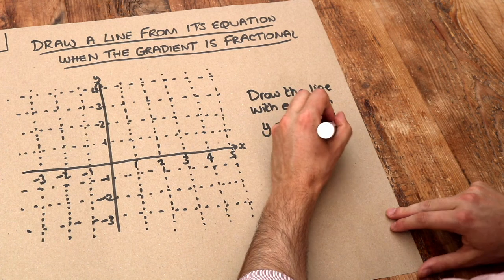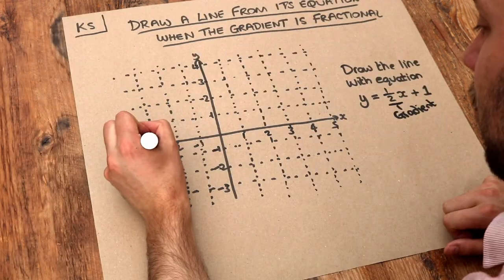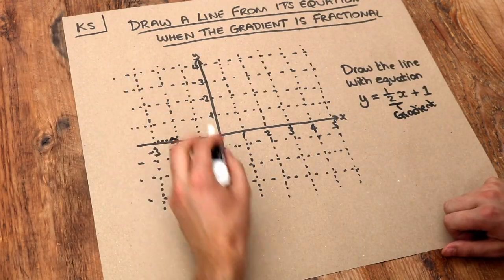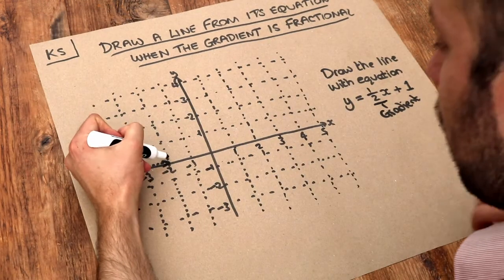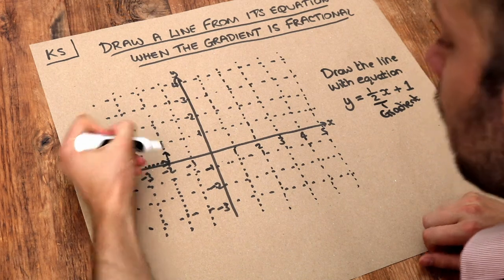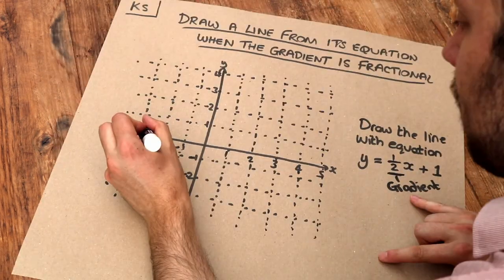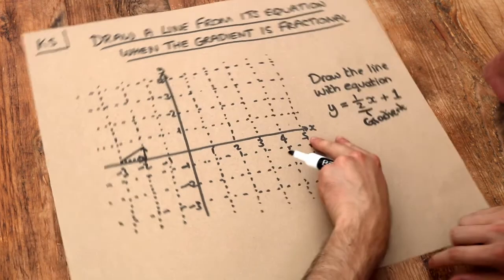The gradient tells you that each time x increases by 1, what does the y value change by? So it's basically saying the y value is going up by half. Each time x increases by 1, the y value goes up by half, so it would be going up like this.